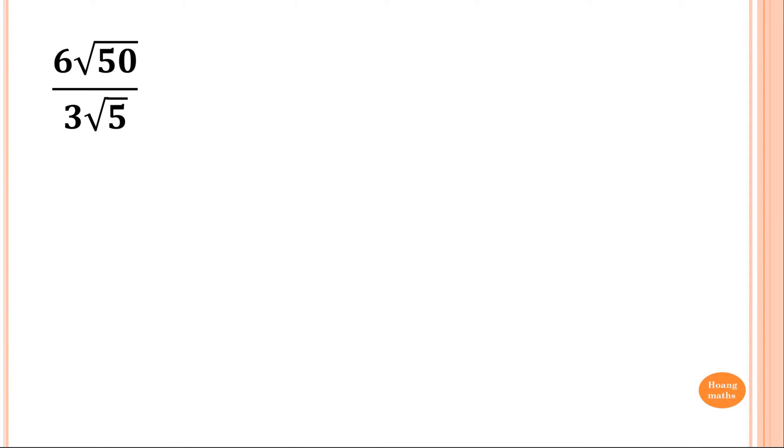Now, this one here. Exactly the same. So what we do? 6 divided by 3 is 2. Now, 50 divided by 5. Remember, square root of 50 over square root of 5 is the same as 50 over 5 square root.